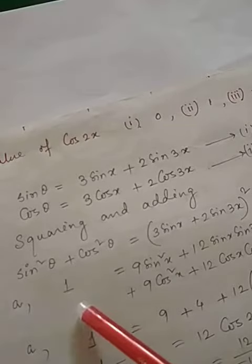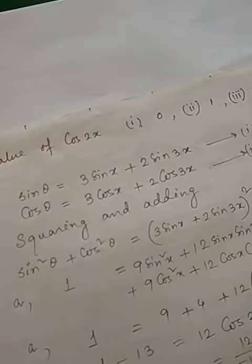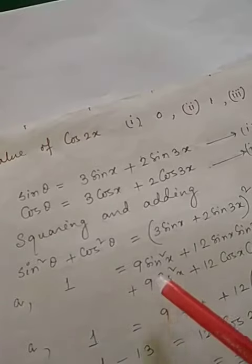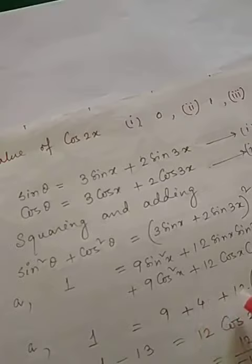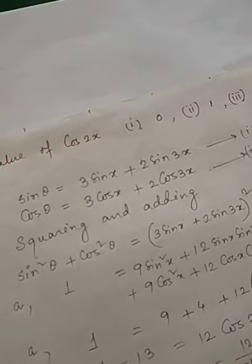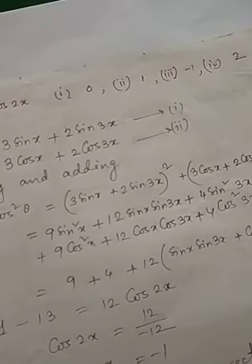Squaring and adding, we get 1 equals to these expressions. Applying the identities, we get 9 plus 4 plus 12sinx sin3x and cosx cos3x.